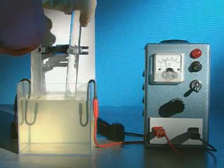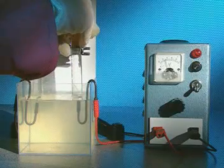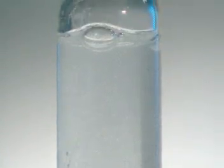To collect the gases, a test tube full of sodium chloride solution is placed over each electrode. Gas displaces the solution and collects in the top of the tube.